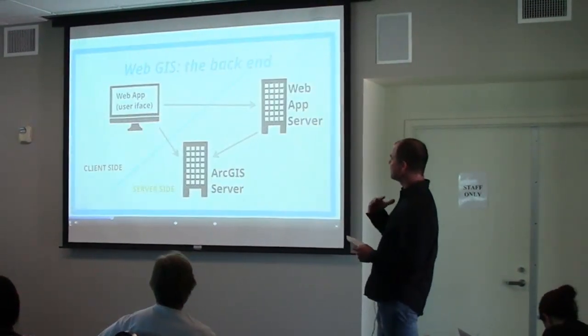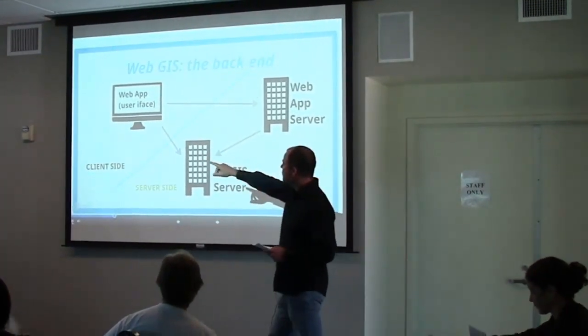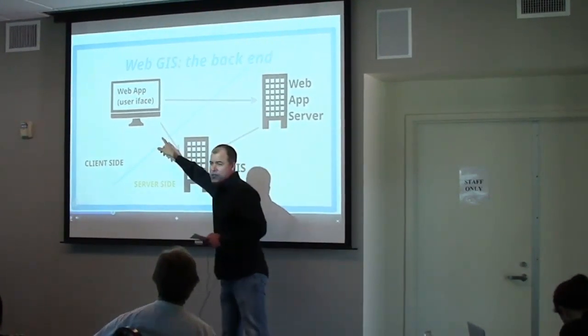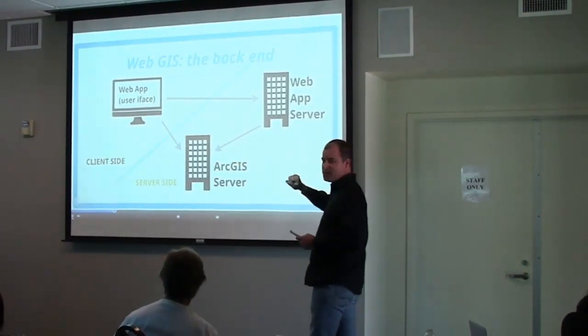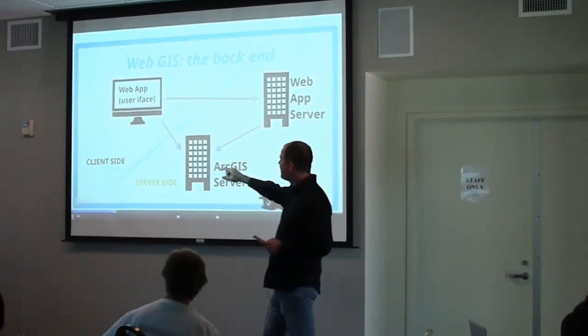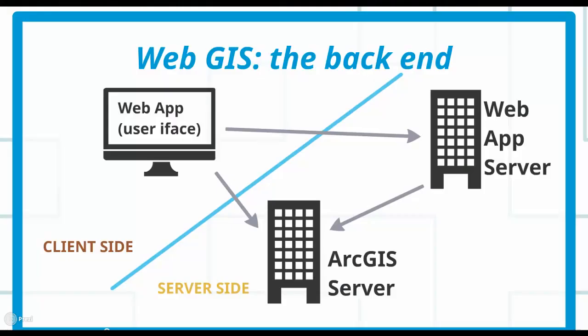In my particular WebGIS, the architecture looks like this. There's a web application that runs in the web browser — that's your user interface. When you need to do geospatial analysis, you send the data and the query off to ArcGIS Server in the back end. It does the analysis and sends the result back. There's also an app server that handles all the non-geospatial operations in the system.